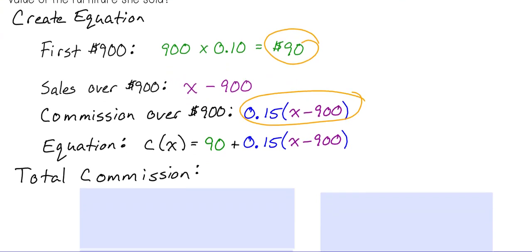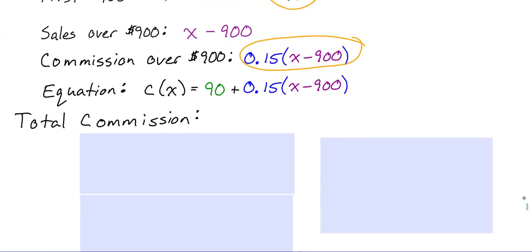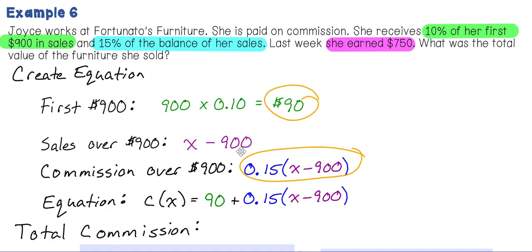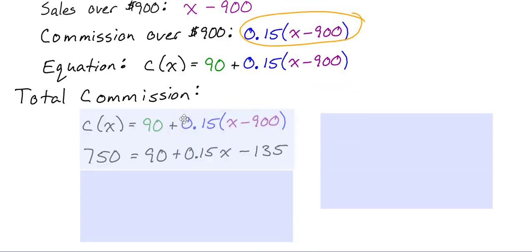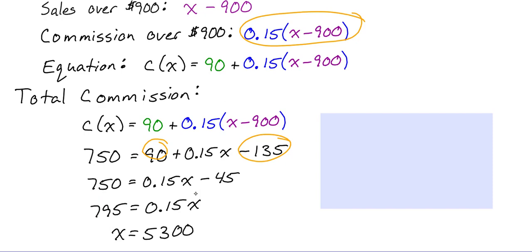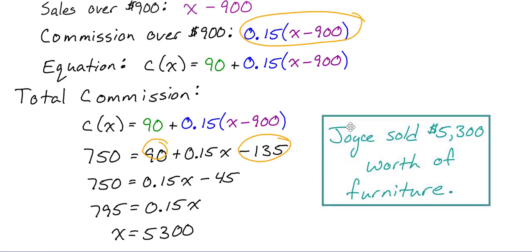To find the total sales, we substitute $750 for C(X) in the equation: 750 = 90 + 0.15(X − 900). Simplifying, we combine 90 and −135 to get −45, then move the −45 and divide by 0.15, arriving at X = 5,300. So Joyce sold $5,300 worth of furniture.